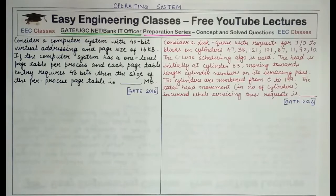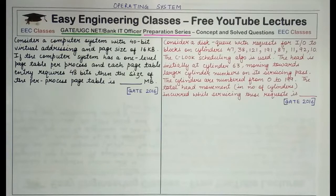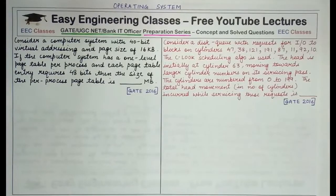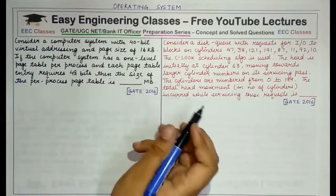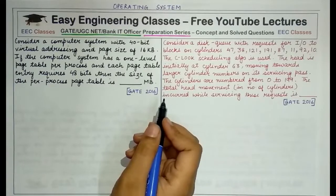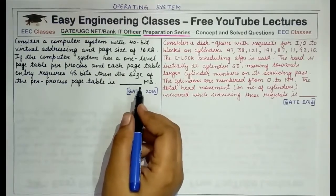Starting with the first question: consider a computer system with 40-bit virtual addressing and a page size of 16 kilobytes. If the computer system has a one-level page table per process and each page table entry requires 48 bits, then the size of the per-process page table is how many MB? Both questions are numerical type, so no options are provided and you have to solve and enter the answer.